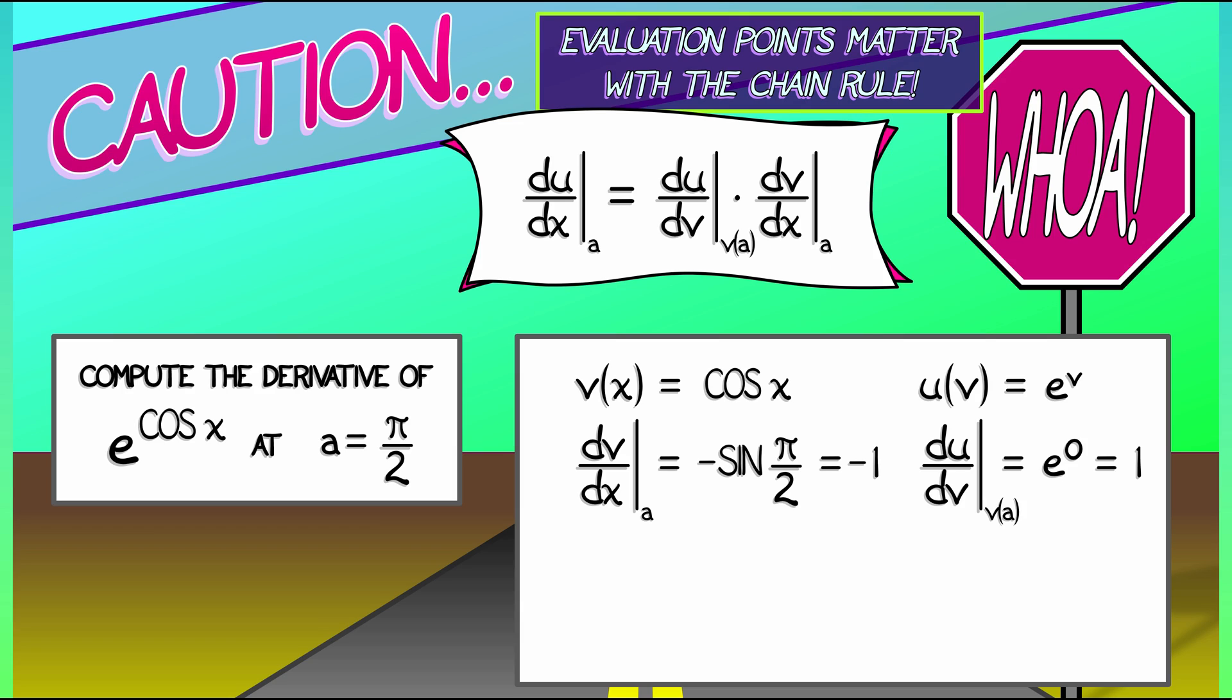And now we're done. The derivative of u with respect to x evaluated at a is du/dv at v of a times dv/dx at a. That's negative 1 times positive 1. The final answer is negative 1.